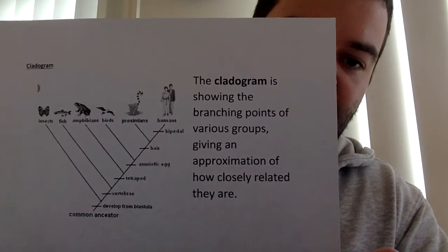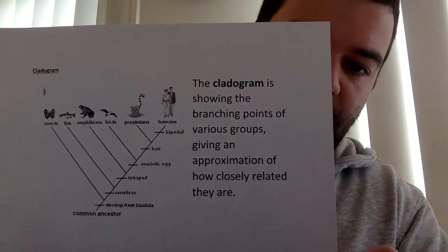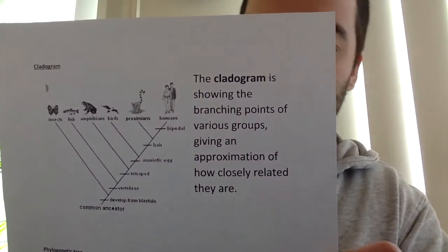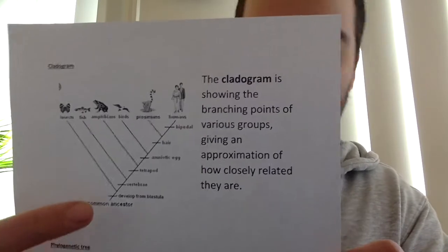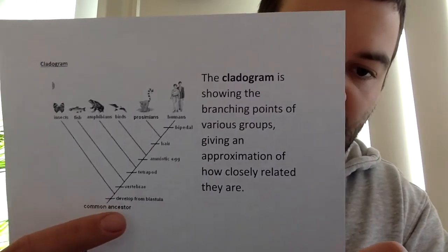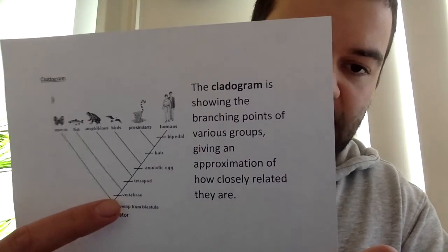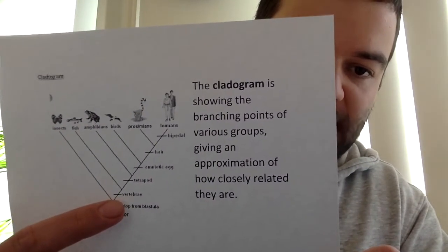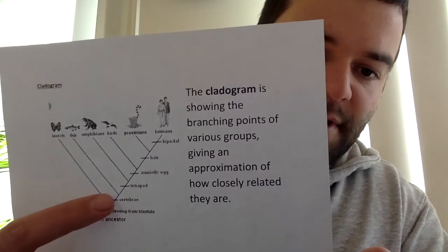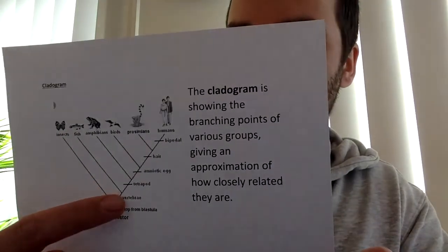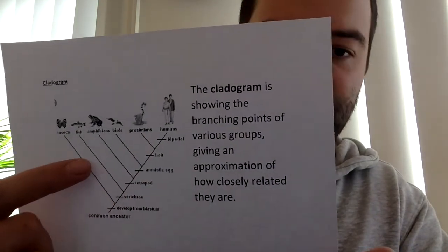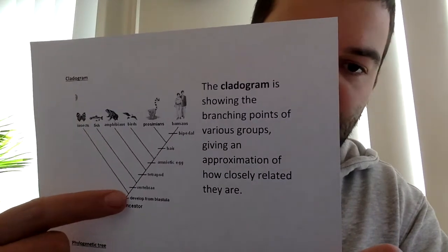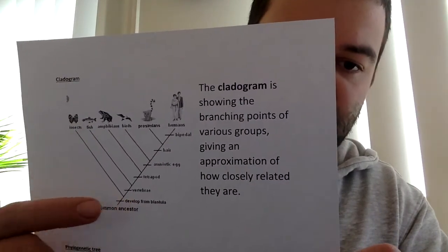Basically, a cladogram just shows how related things are, and the key thing you want to look for is the branching points in the diagram. At a branching point, that's when the groups had a common ancestor, after which they don't. At this point going up here, that's where insects branched out from all the other groups, which are vertebrates.